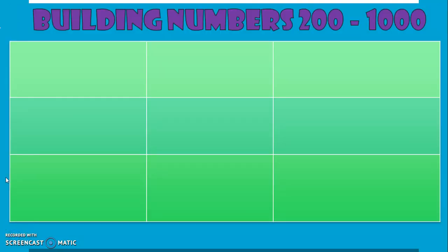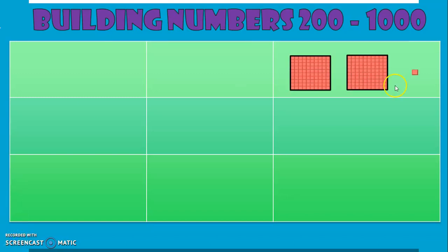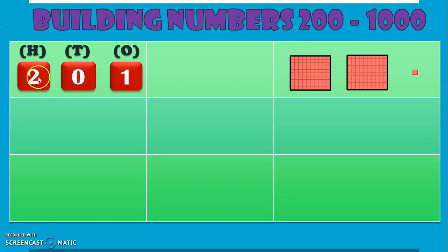Now that we have learnt counting in 100s, both in numbers and number names up to 1000, we can go ahead with building the remaining numbers from 200 up to 1000. Here we will have block representations of the numbers. We will have to identify the number and also write the number name. So this is a representation of 100. We have 200s over here and one single block, so we have 2 hundreds and one 1, which makes 201. We have 2 in the 100s place, no number in the 10s place, and 1 in the 1s place. The number name is Two Hundred and One.